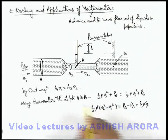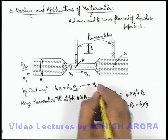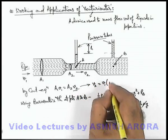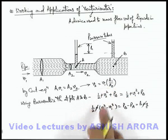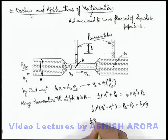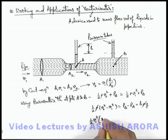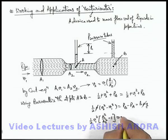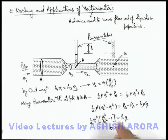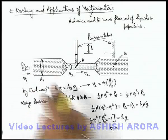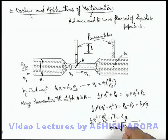And we can also substitute the value of v2 from here. v2 can be given as v1 multiplied by A1 by A2. If we substitute the value of v2 here, this will give us half v1 square (A1 square by A2 square minus 1) is equal to h g. And from this expression we'll get the value of v1, that is the flow velocity of liquid in pipeline which is given as root of 2 g h divided by (A1 square by A2 square minus 1).